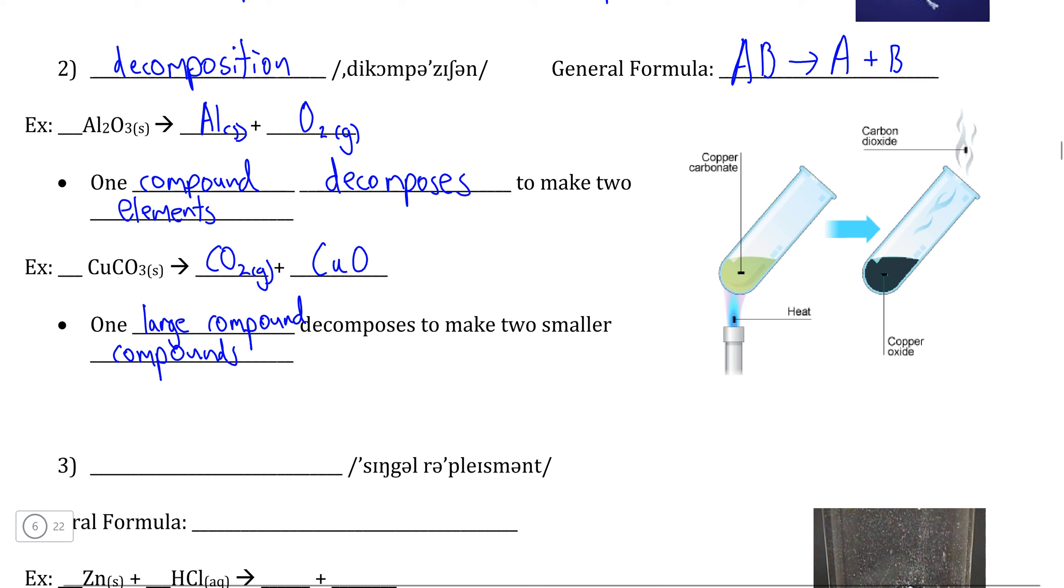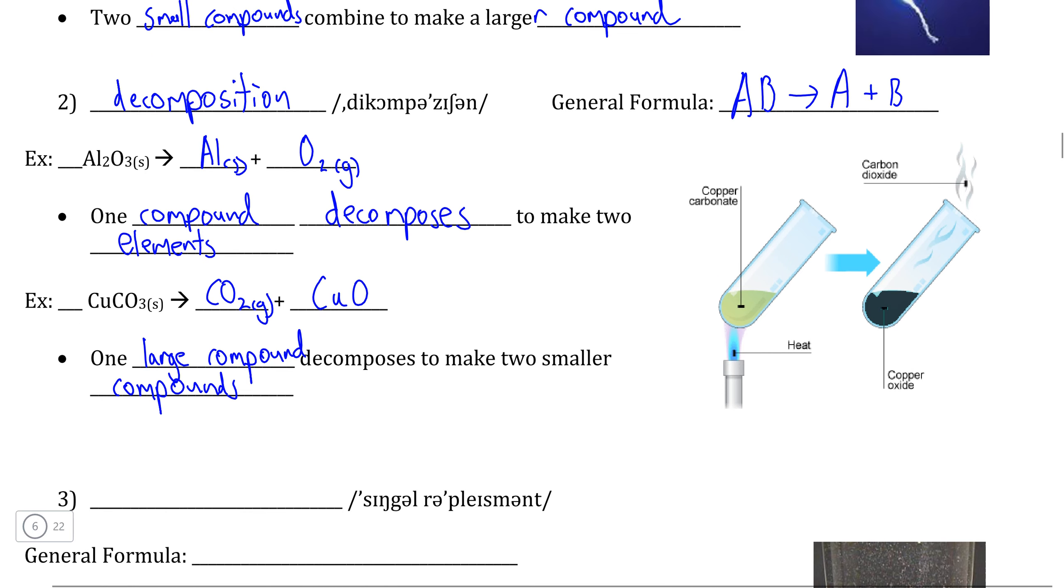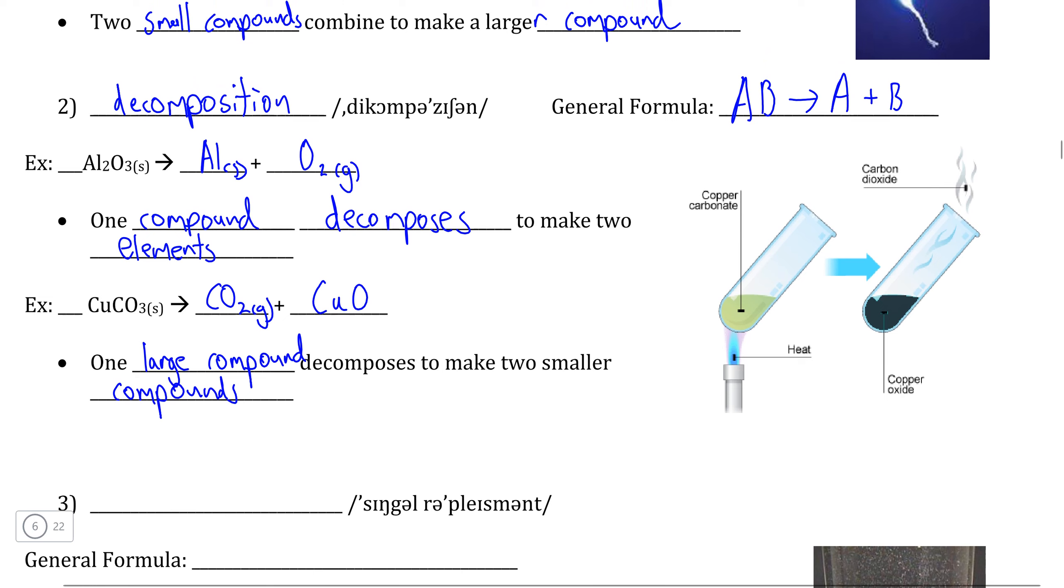And we can see that if we were to write the synthesis reaction, adding copper-2-oxide and carbon dioxide together, we would end up with our reactant back in this case. And because it technically follows the AB decomposes to A plus B formula, we can likewise classify this as a decomposition reaction.